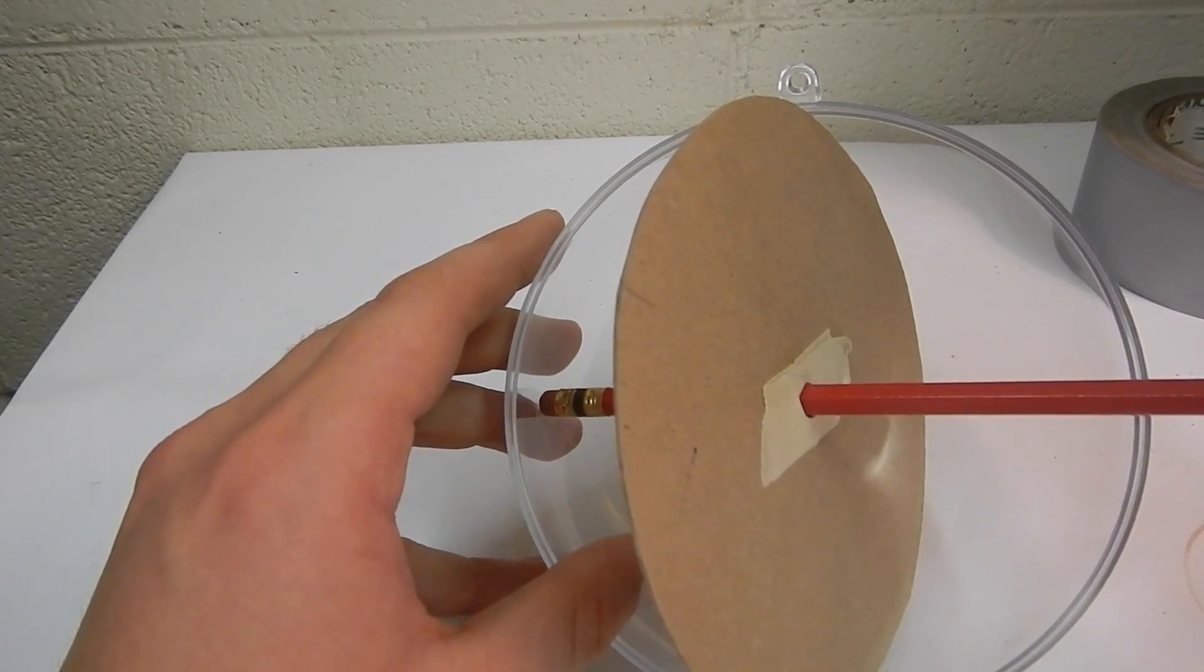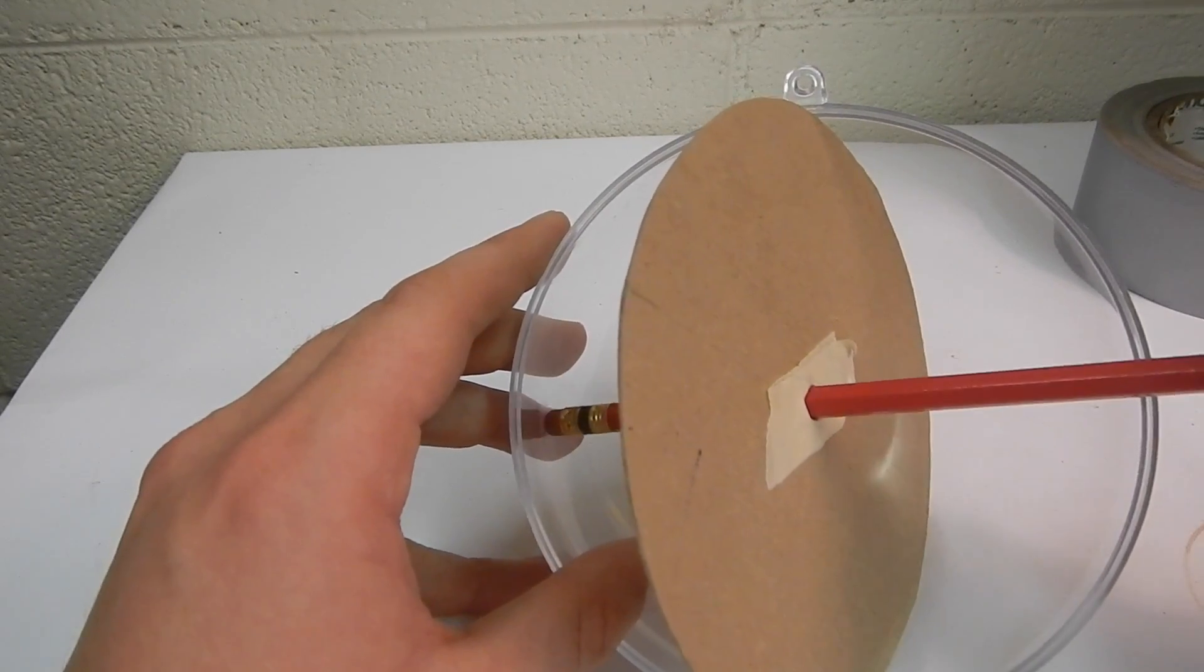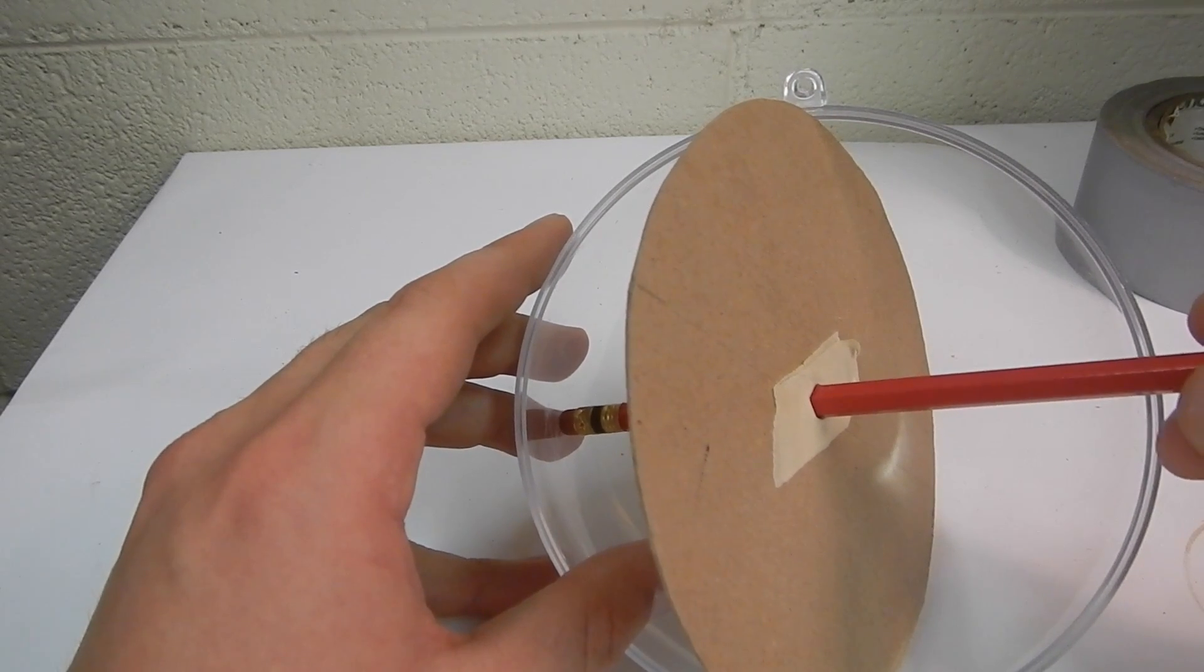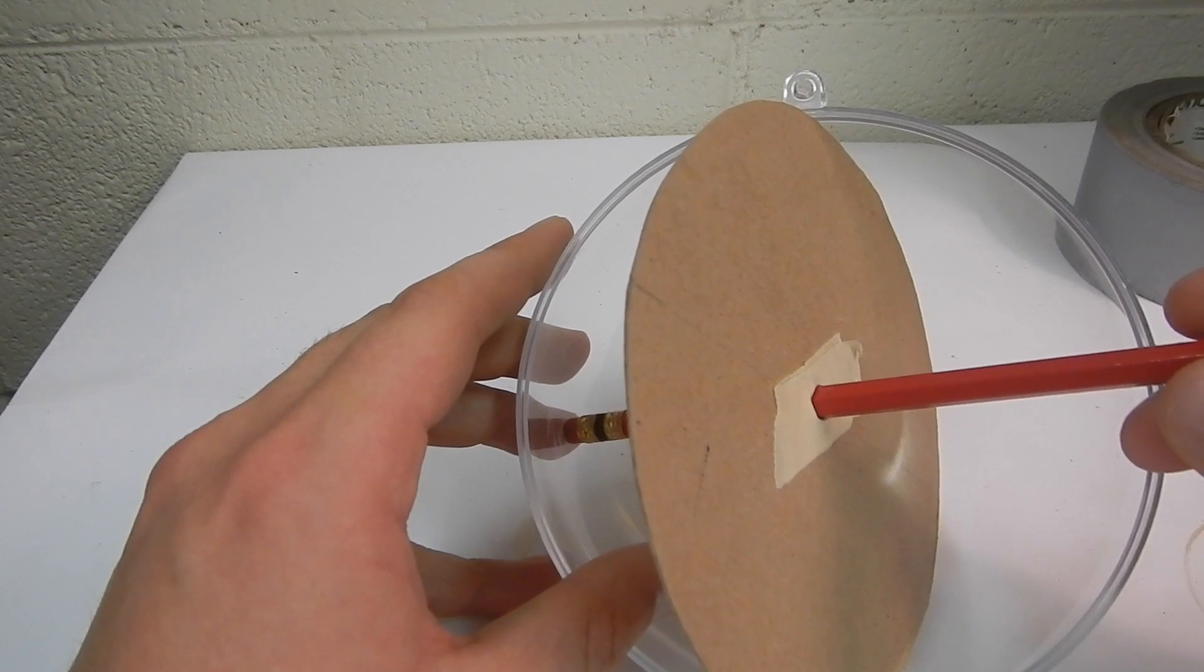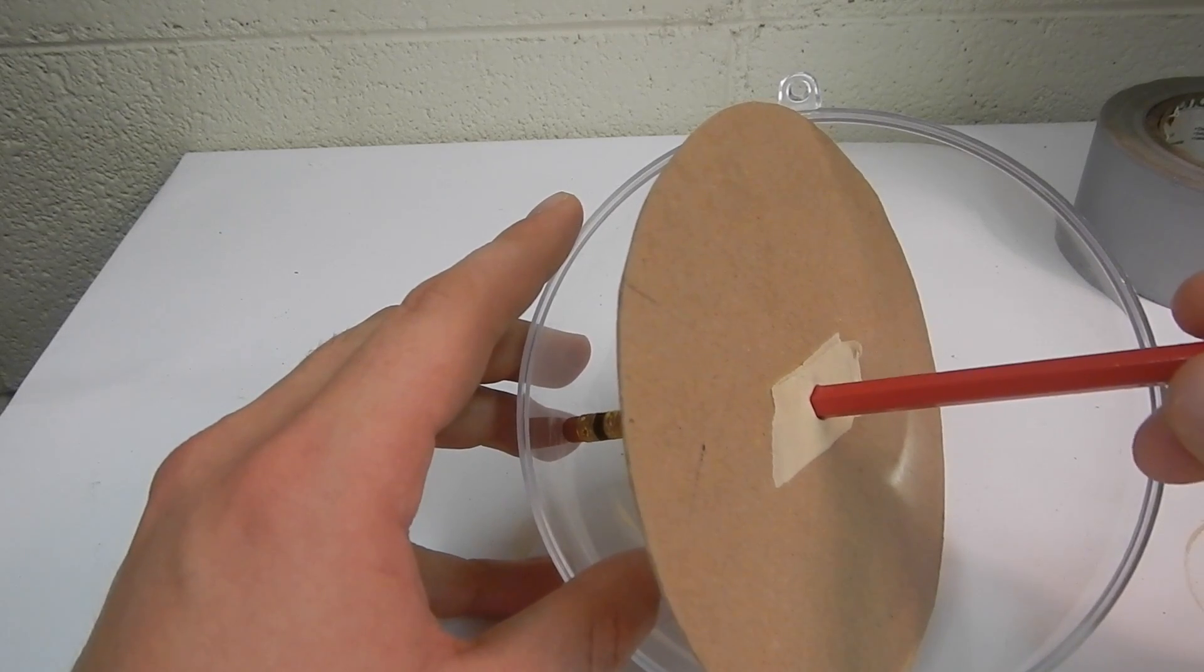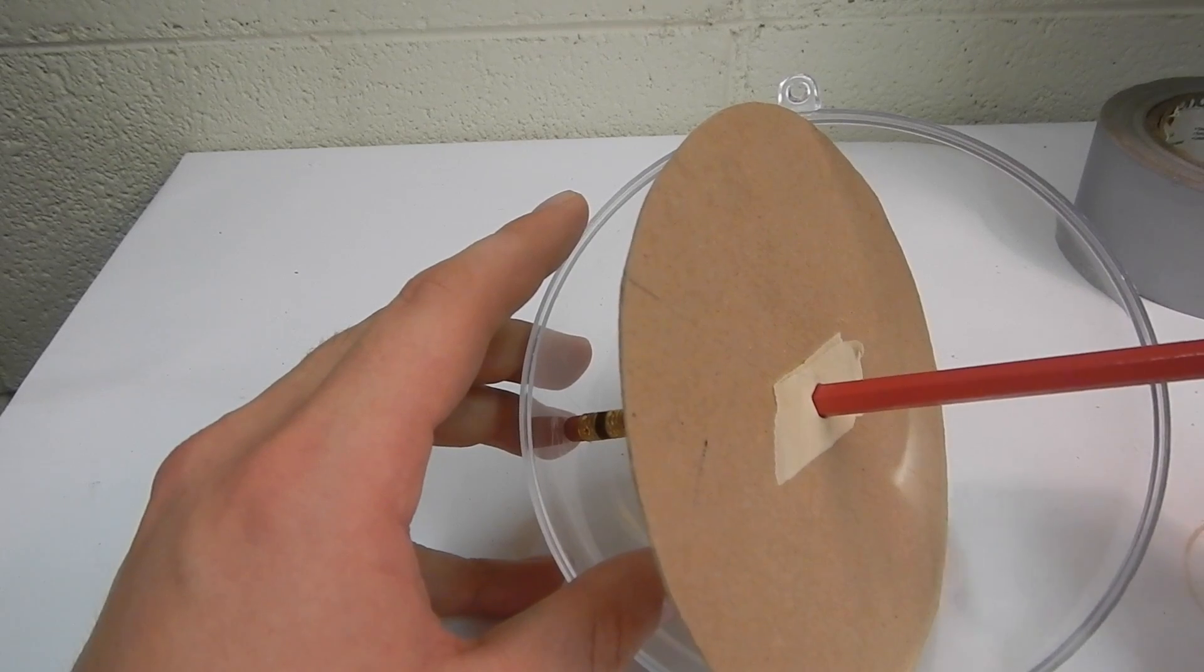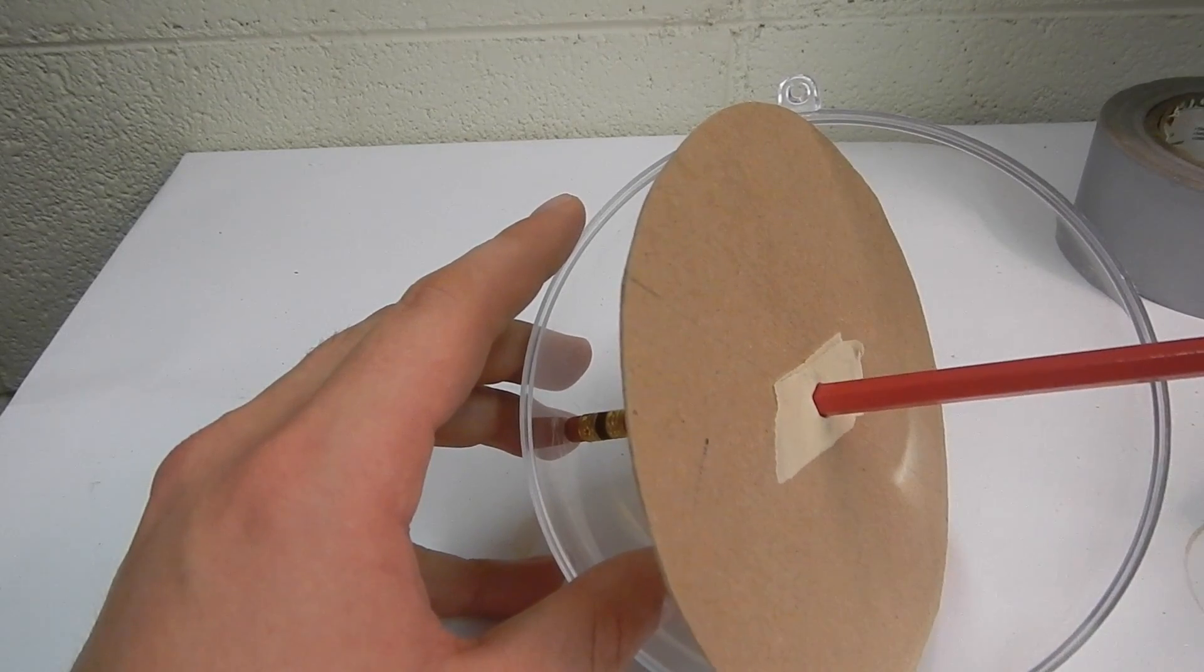So to summarize, poles are used to mark a lot of data on our stereonet. And we'll move into something where we can actually contour these poles to find an average. But they help us deal with a lot of information on one stereonet.